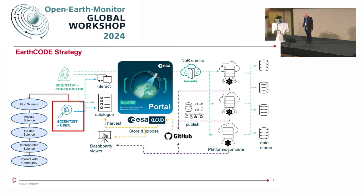For the scientist user, EarthCode will support finding existing experiments and data, the ability to access experiments and data, and then reuse those experiments, either through reproducibility — reproducing existing experiments — or making modifications to further science. Interoperability will be supported through the use of best practice and some of the EWEPCA+ building blocks. And again, there will be interaction with the community through Workstream 3.